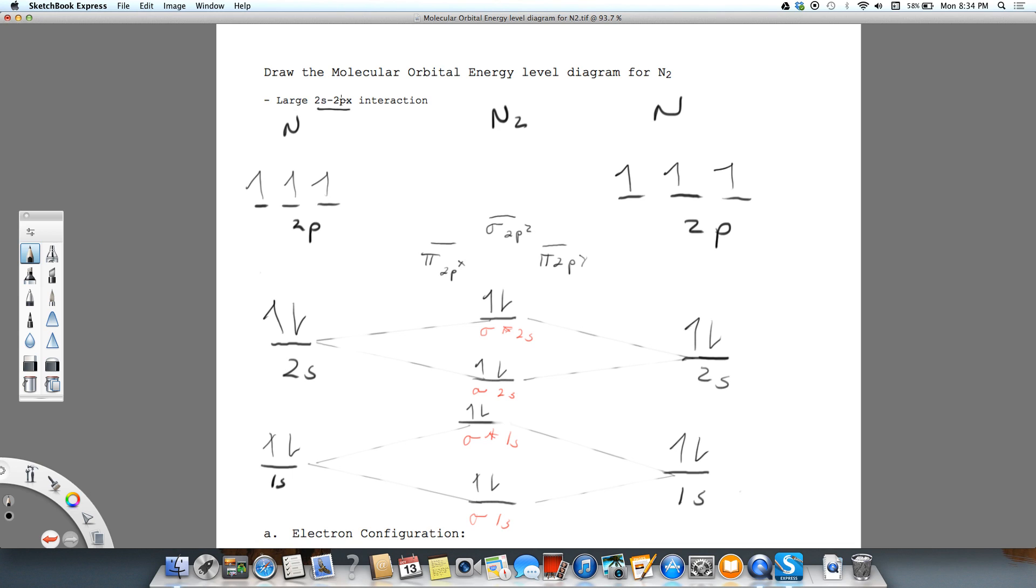So because of this large 2s, 2p interaction, our pi bonds are at lower energy. Then when we go to fill up our antibonding orbitals,